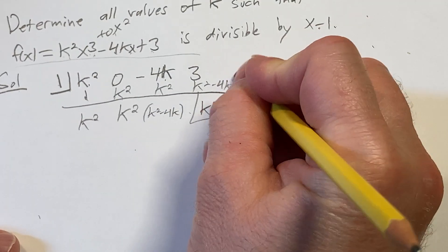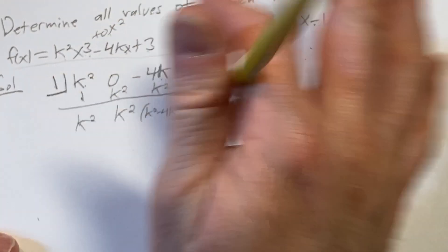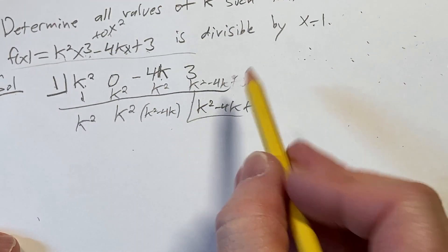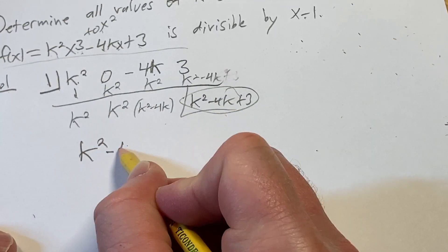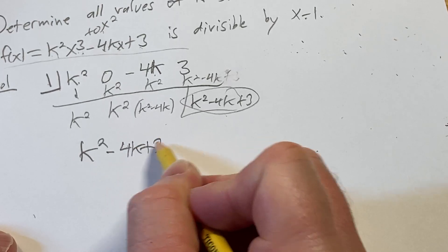All right, so now we want the remainder to be 0, right? So this is the remainder, you basically set this equal to 0. So k squared minus 4k plus 3 equals 0.